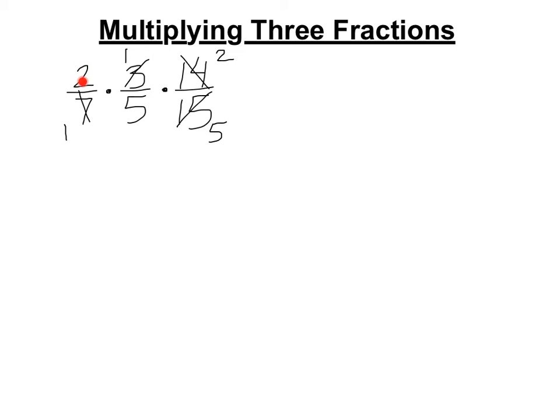And now if we look, we've got a 2, a 1 and a 2 on top, a 1, a 5 and a 5 on bottom. None of that can reduce and so we're ready to multiply. 2 times 1 times 2 is 4. 1 times 5 times 5 is 25. And so the answer is 4 25ths.